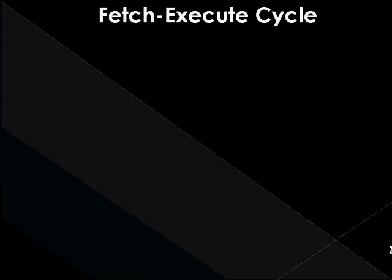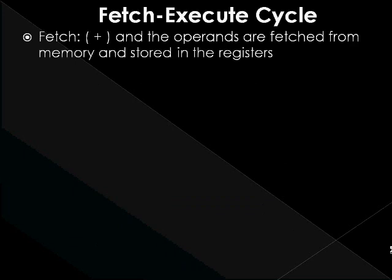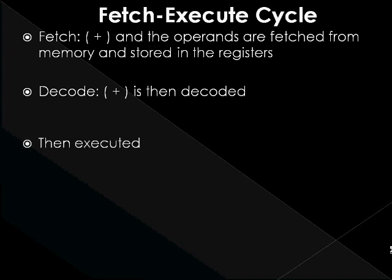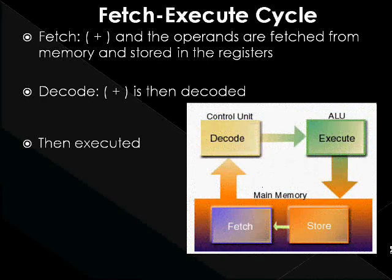An example of a fetch-execute cycle is executed as follows. Fetch: the add instruction and the operands, that is the numbers to be added, are fetched from memory and stored in the registers. All data and instructions in a computer are stored in memory. Decode: the add instruction is then decoded. This is done by the control unit, which sends appropriate signals. And finally, execute: the ALU will then perform the addition operation. The figure shows the process of the fetch-execute cycle.